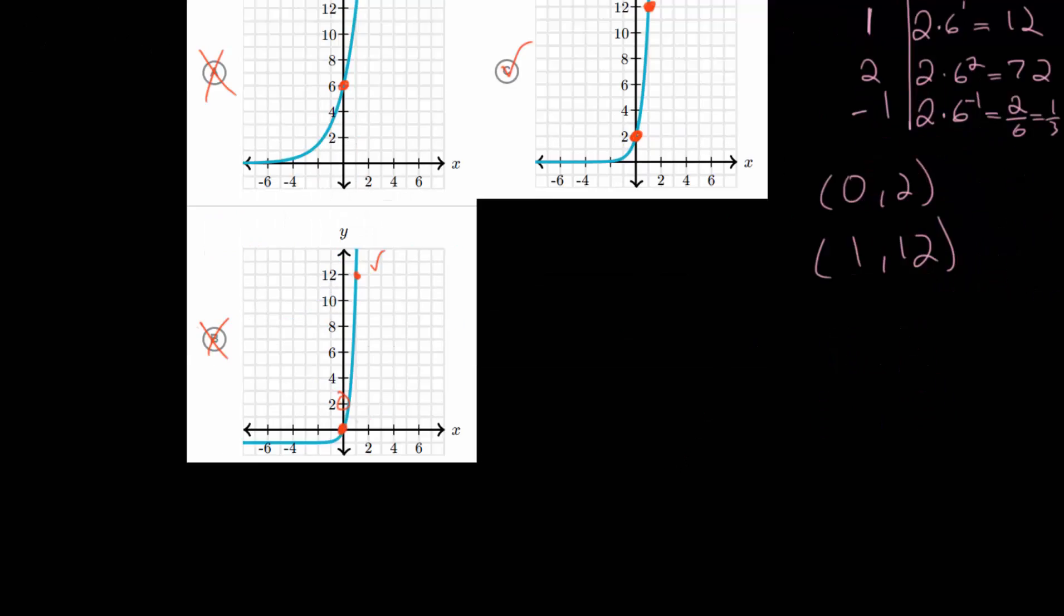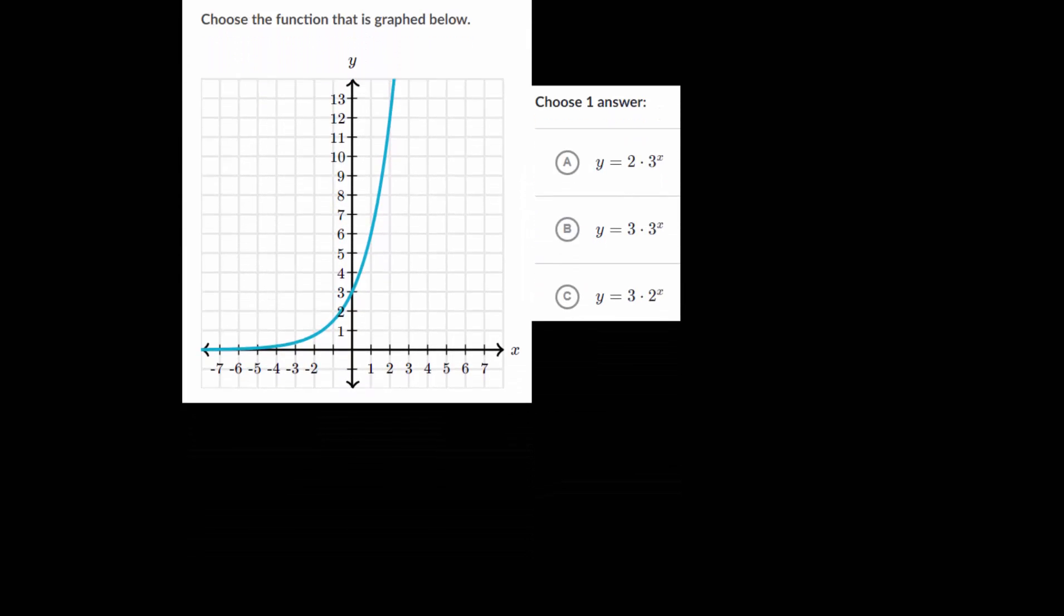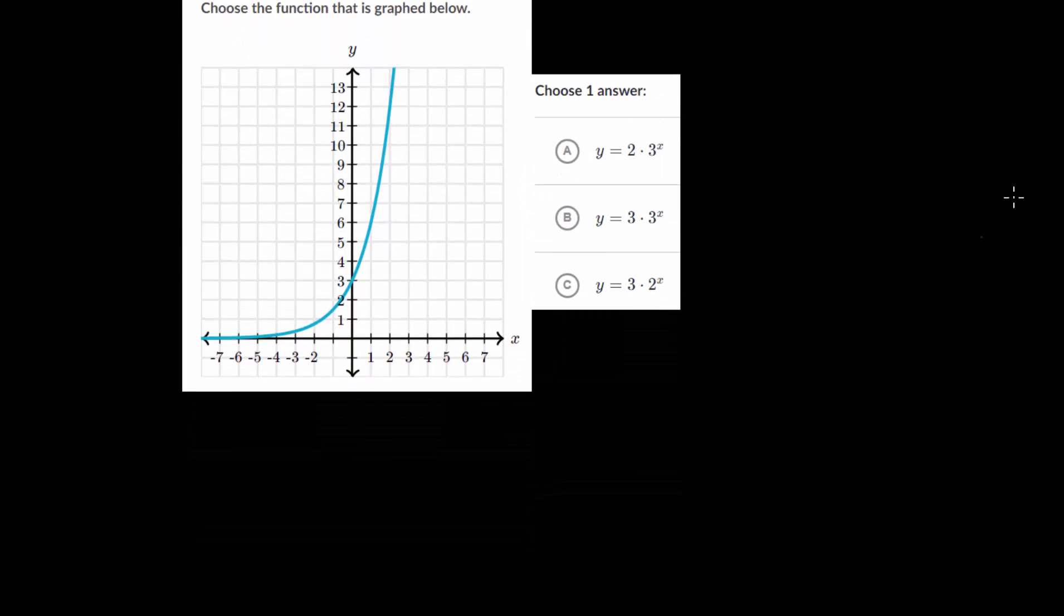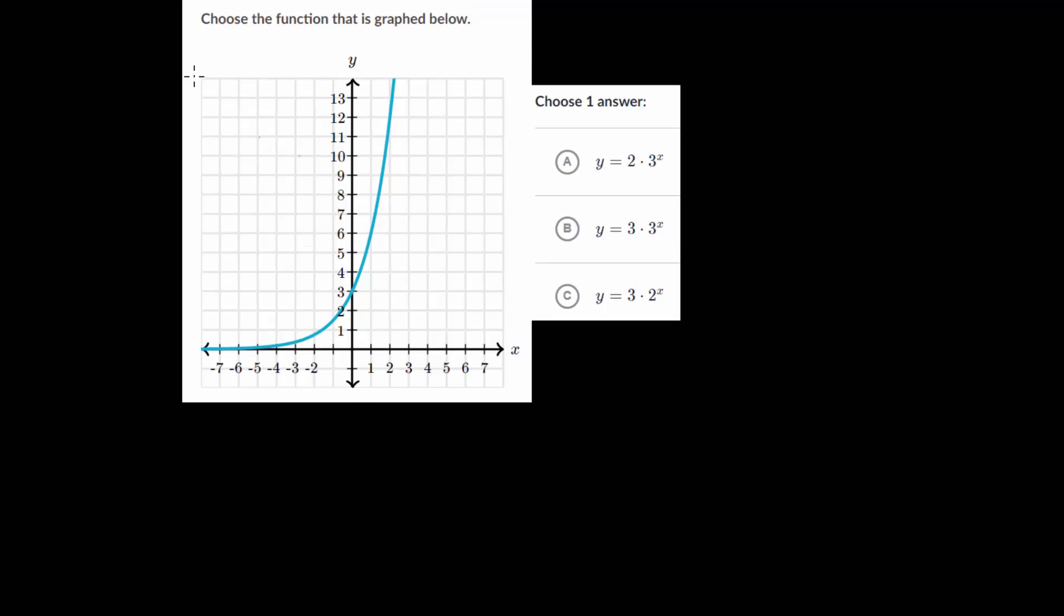Let's move on. We'll do one more problem. In this problem, we're again given the graph of our function and we need to determine what its equation would be. Let's rewrite our general equation. Y equals A multiplied by B to the X, where we know that A is when X equals 0. When X is 0, Y would just be A, since we'd have B to the 0, which is just 1.